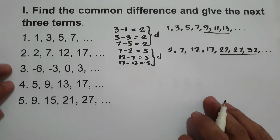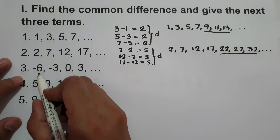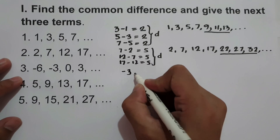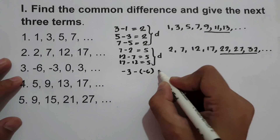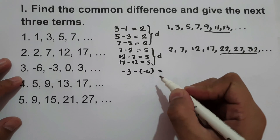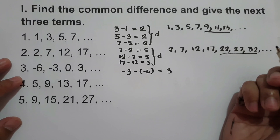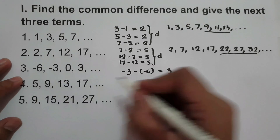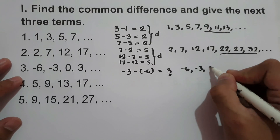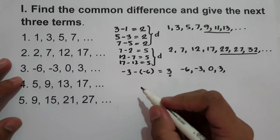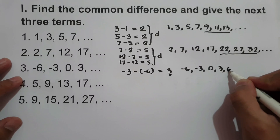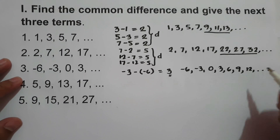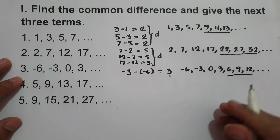What about number 3? We have negative 6, negative 3, 0, 3. We have negative 3 minus negative 6, which equals 3. So the common difference here is 3. To find the next three terms in the sequence negative 6, negative 3, 0, 3: 3 plus 3 is 6, 6 plus 3 is 9, and 9 plus 3 is 12. So the next three terms are 6, 9, and 12.